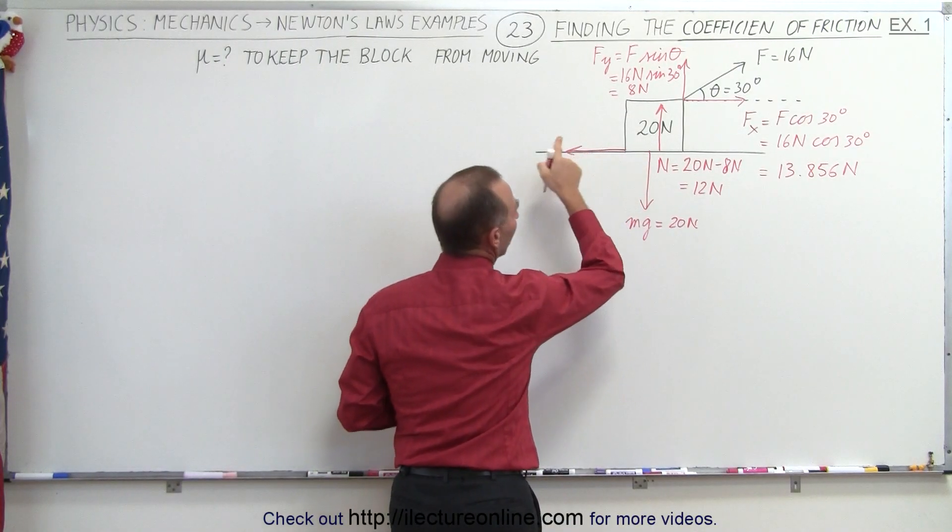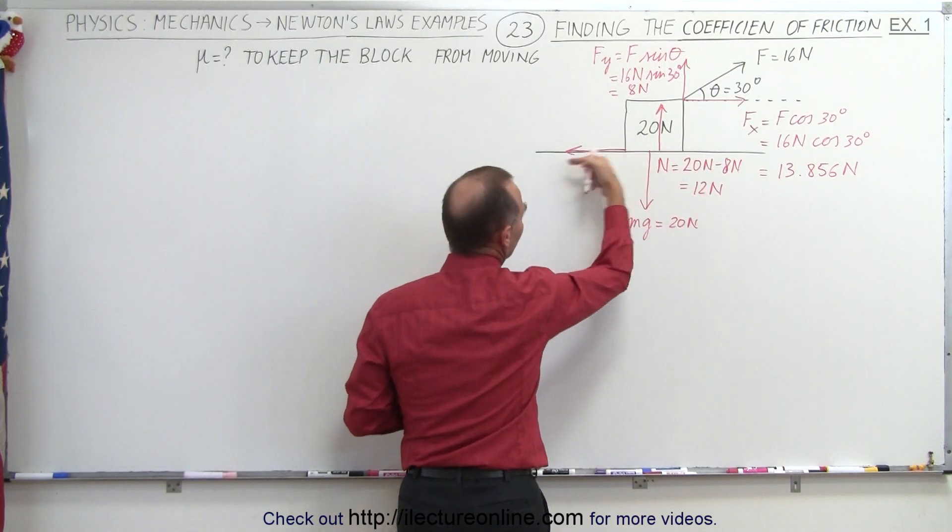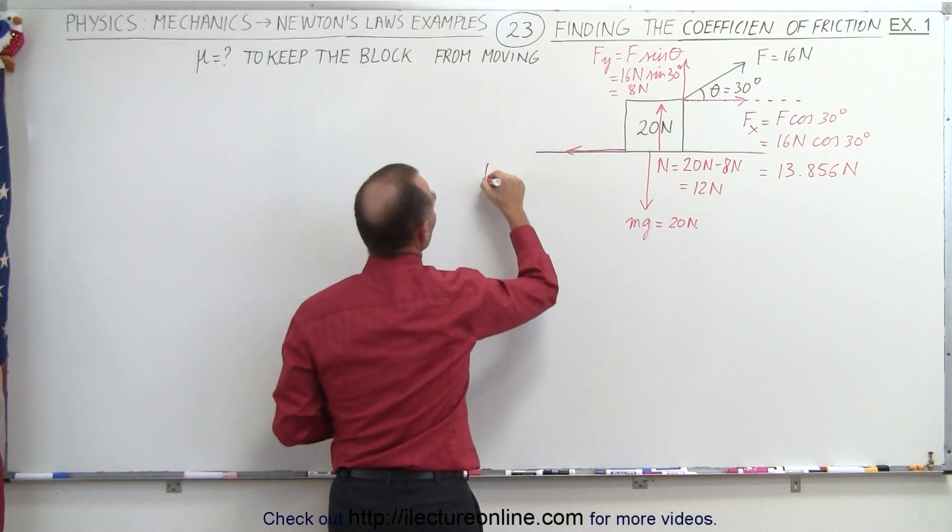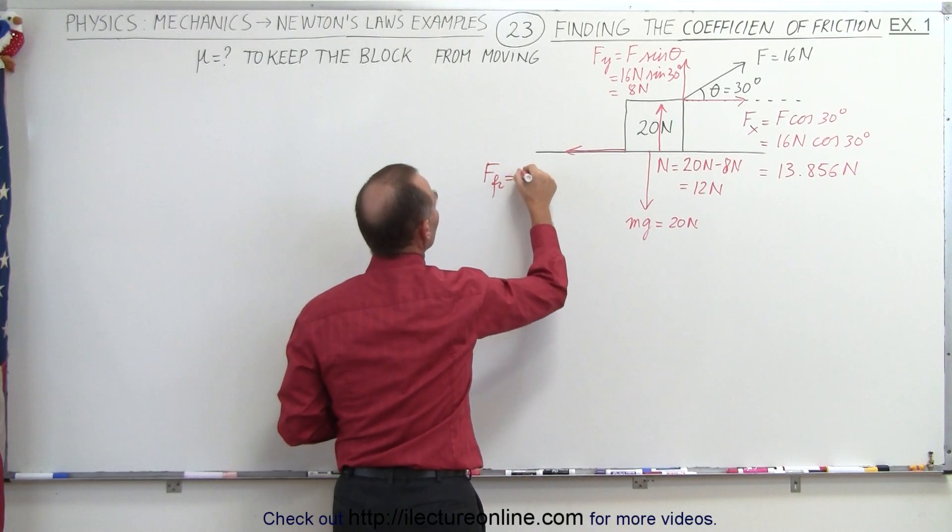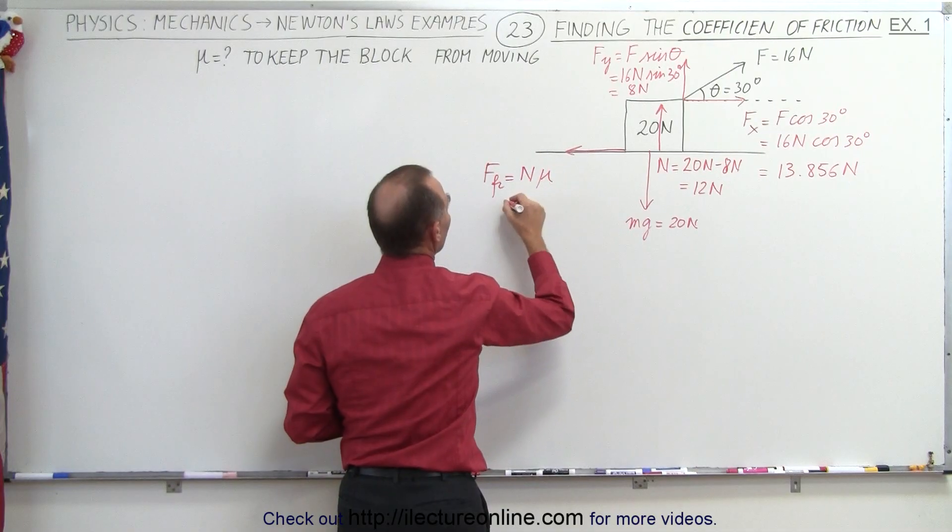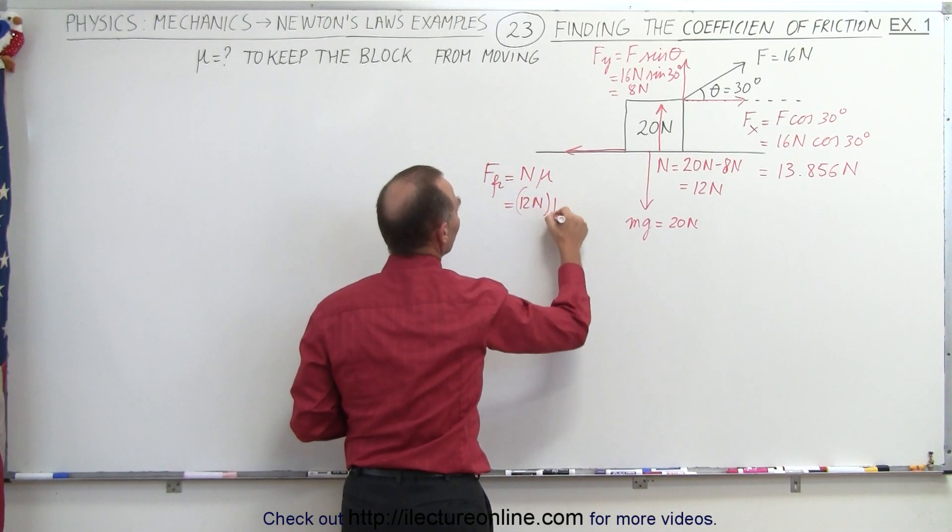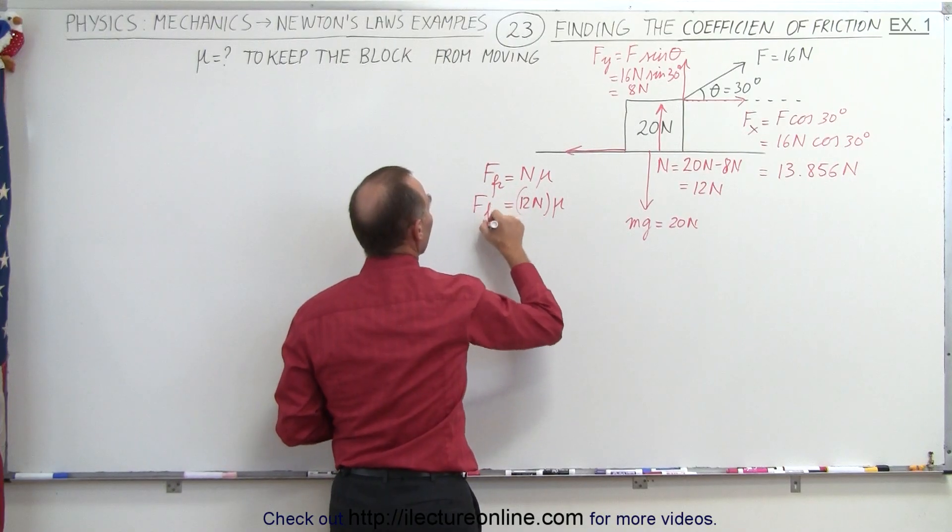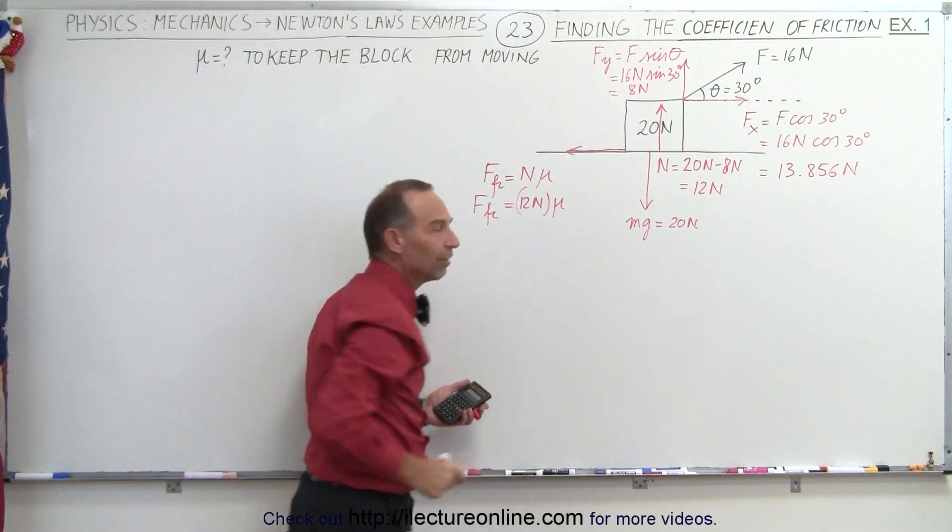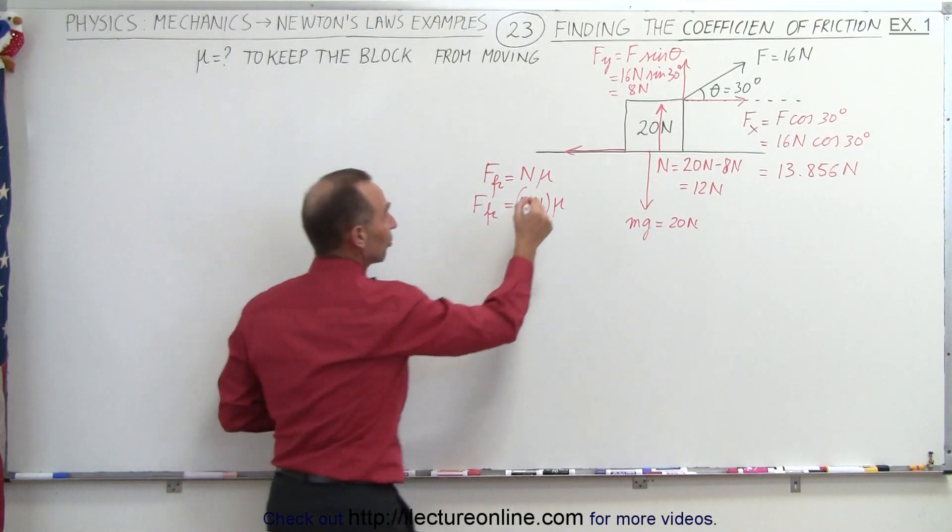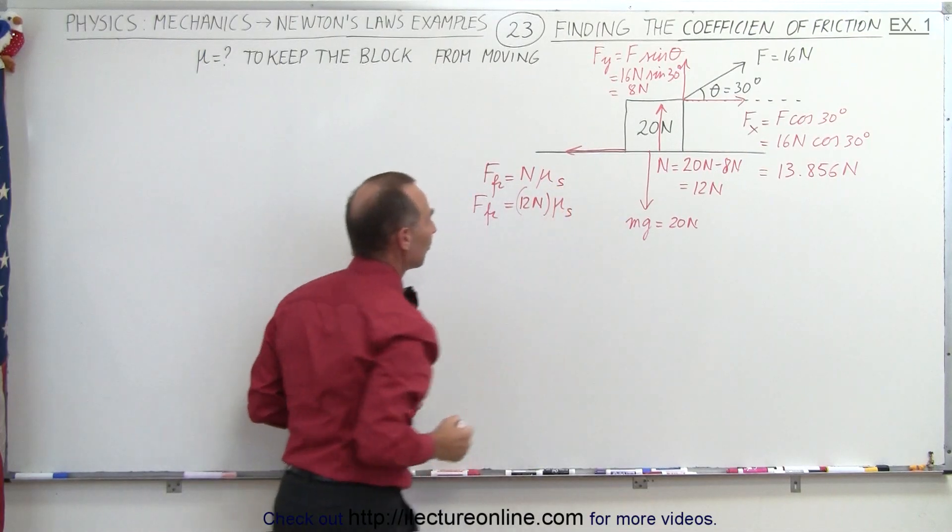Since the block is being pulled in that direction, the friction force will be an opposing force. So the friction force is equal to the normal force times μ. In this case the normal force will be 12 newtons times μ, and we're trying to find the value for μ, the static coefficient of friction.